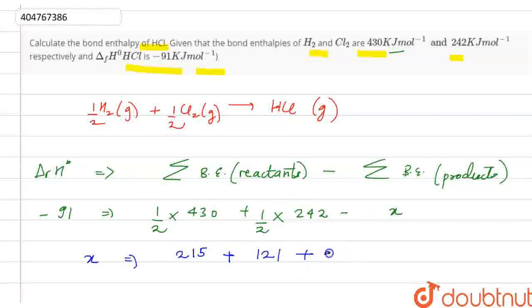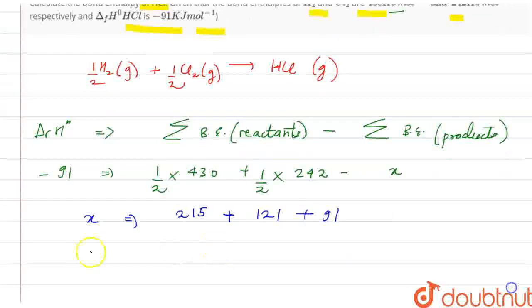Right side, what will happen? Plus 91. So what is the value of x? Calculate it, it comes out to be 427 kJ per mole.